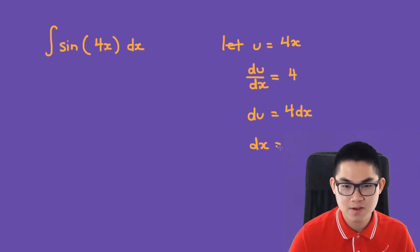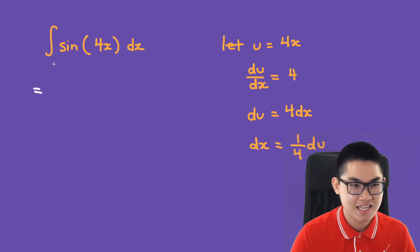And dx is equal to 1 over 4 times du. And this is equal to the integral of sine of u. And dx is 1 over 4 times du.